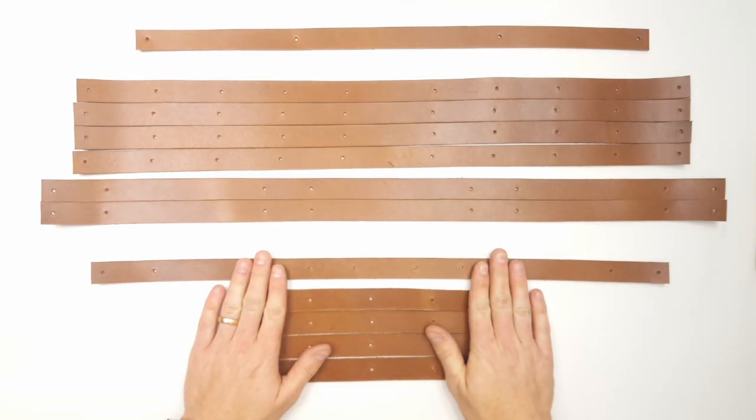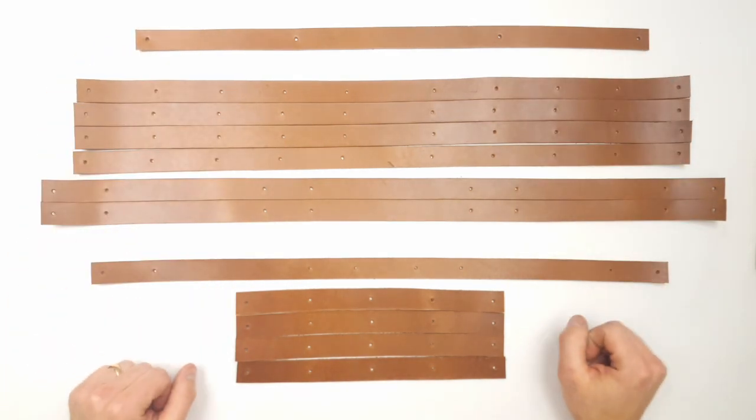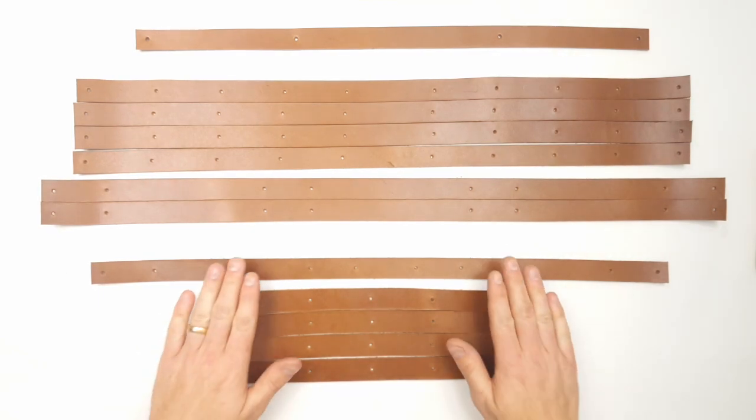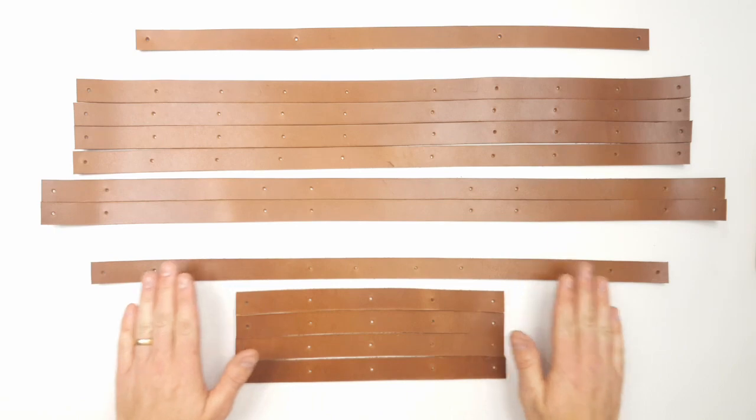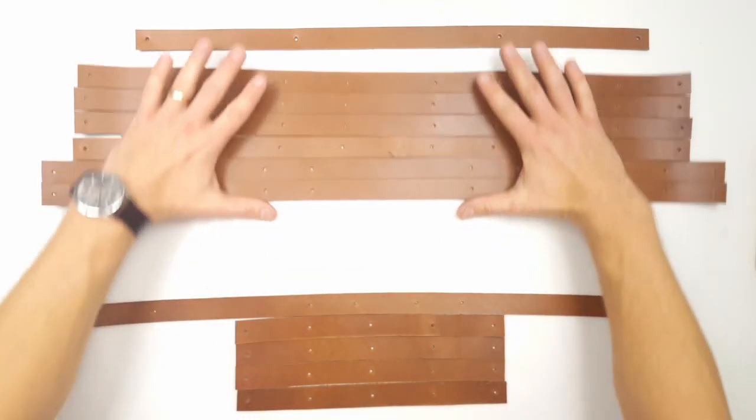Anyways, this is the middle part. These are the sides, two of them, and this is the actual handle. To make this, the easiest way is to start with the middle, because then we are going to add on to that with the two sides. So, let's take this, and take the rest out.